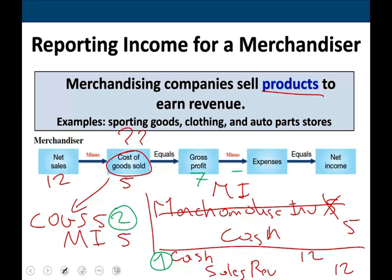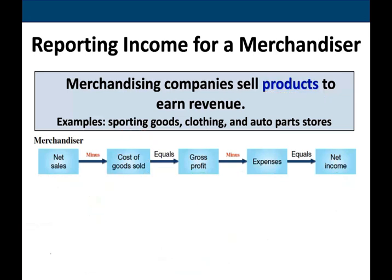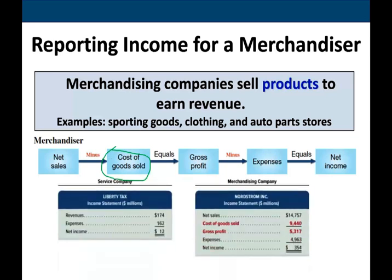Sales minus cost of goods sold equals something called gross profit — in this case $7. From your gross profit, you incur operating expenses, let's assume $4, and you would be left with net income of $3. This is the income statement for a merchandiser, which is more involved than a service company. In a service company, we only had revenues minus expenses — we did not have cost of goods sold. We also introduced the concept of merchandise inventory, which service companies generally don't have in significant amounts.